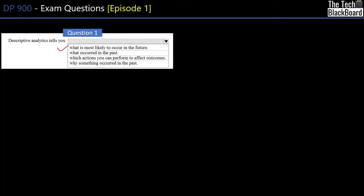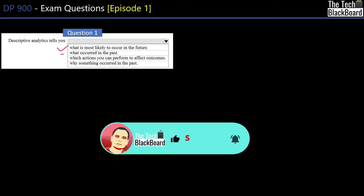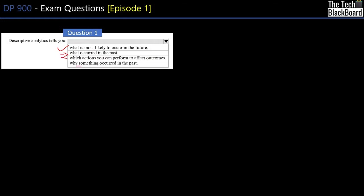The four options in the drop-down menu are: what is most likely to occur in the future; what occurred in the past; which actions you can perform to affect outcomes; and why something occurred in the past. Now let's understand the different kinds of analytics before we answer. Descriptive analytics tells you what is happening or what has happened in the past.